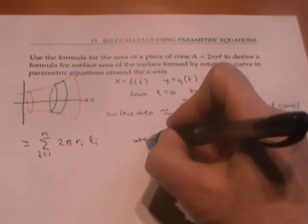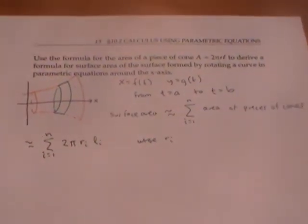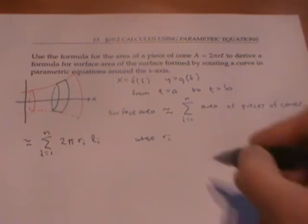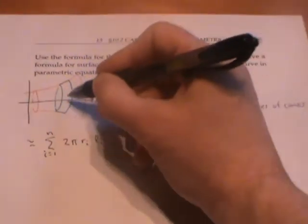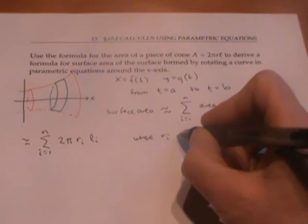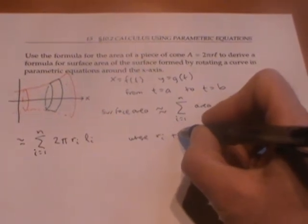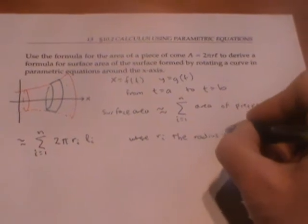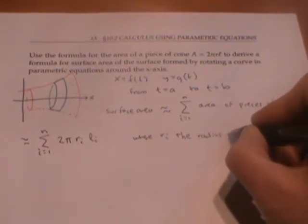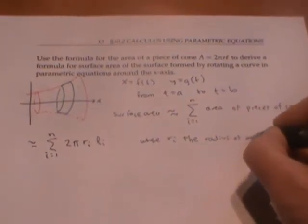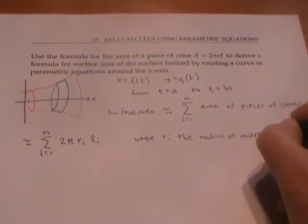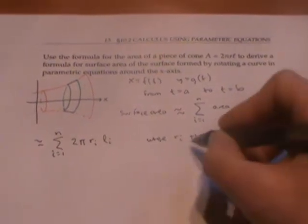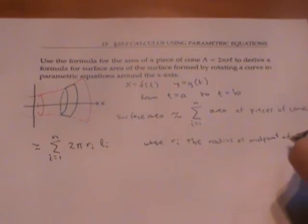where r_i is the average radius of my smallest piece of cone. In other words, r_i is the radius at the midpoint of the i-th interval.